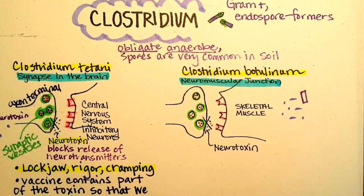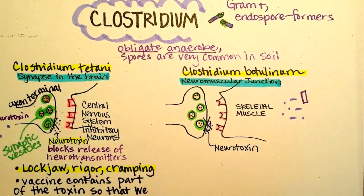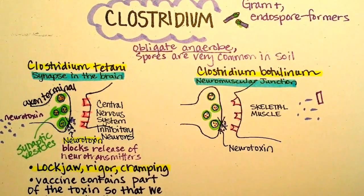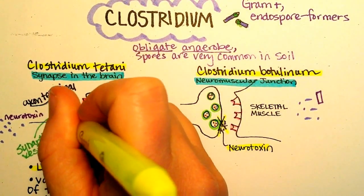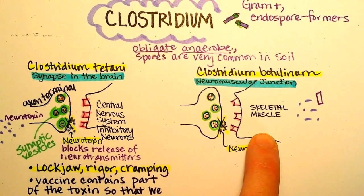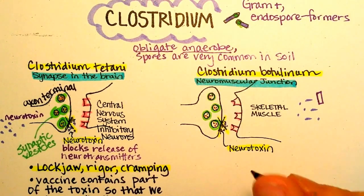But the neurotoxin is blocking that synaptic release, just like it did with Clostridium tetani. So in both cases you end up with no transmission. This time, though, if this neuron is supposed to make this muscle contract and you block it, you have different symptoms — instead of lockjaw, we have paralysis.